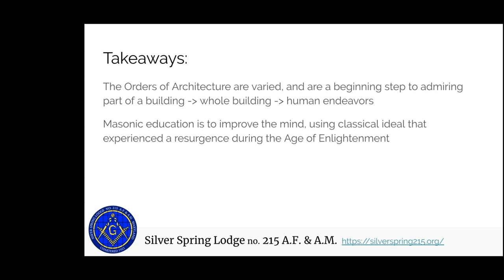Takeaways from all of this: orders of architecture are varied, but knowing them is just a beginning step to admiring part of a building — you can now look at the top of a column and identify it, understand the different shaft, flutes, and bases. Stepping back, you've got the whole building to look at, and just like with King Solomon's Temple, you can marvel at an entire human endeavor of building something massive. We use this Masonic education to improve our minds, using these classical ideals that experienced resurgence during the Enlightenment and the Renaissance.